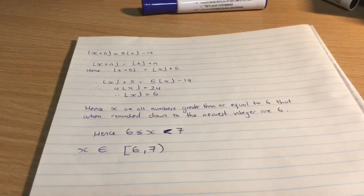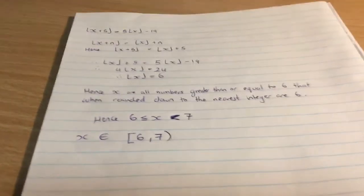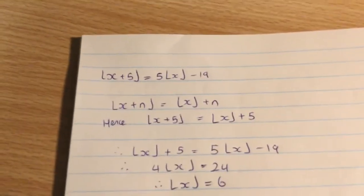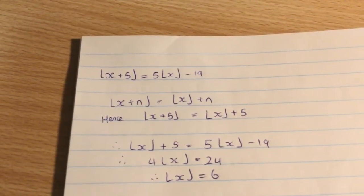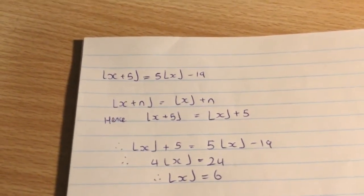Hello everyone, and in this episode we're going to be looking at the floor function and actually dissecting what is a reasonably challenging problem. So what we're given is floor of x plus 5 equals 5 times floor of x minus 19, and we're asked to solve that.